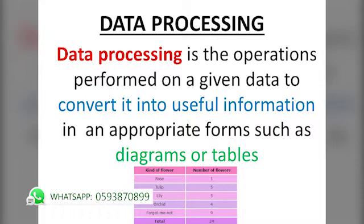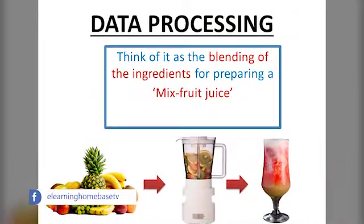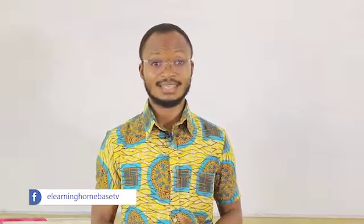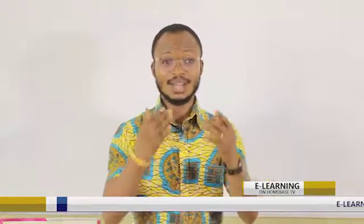Let me throw more light on that. When we say operations performed on a given data to convert it, we are talking about all the activities that go into preparing the data and making it useful. For example, going back to our mixed fruit juice example — the moment you put all your variety of fruits into the blending machine and you begin to blend them, pressing the blend button on the device, you have started the processing. We have an example on the screen showing kind of flower and number of flowers.